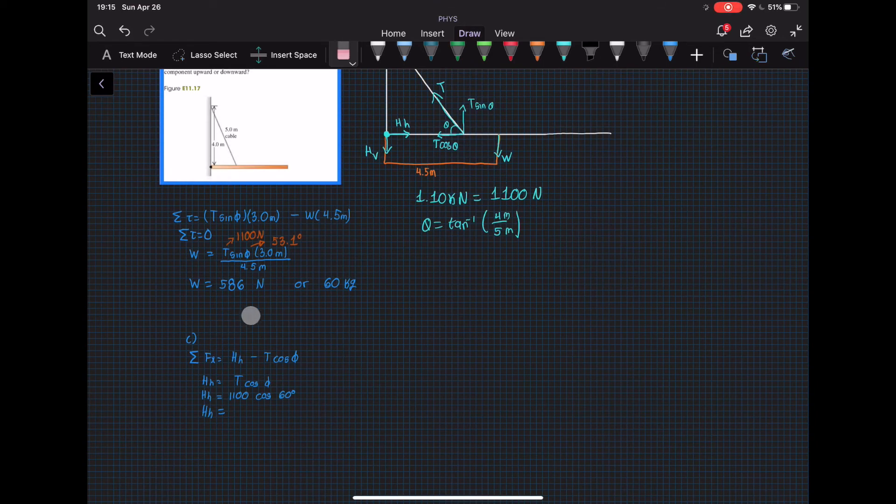So we can bring this force to the other side, and after we plug in numbers we get 660 newtons. And now for the sum of the forces in the y-direction, we're gonna find the hinge in the vertical direction.